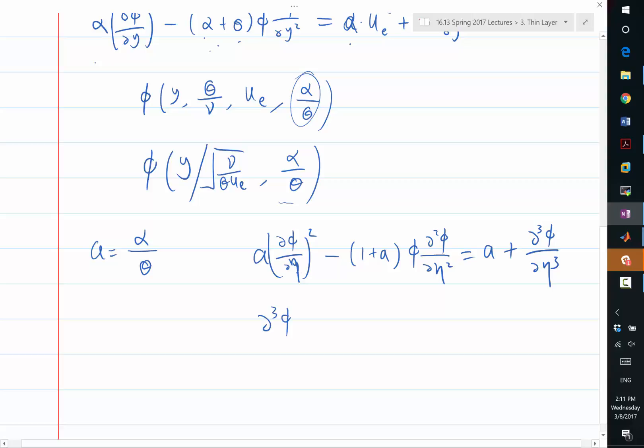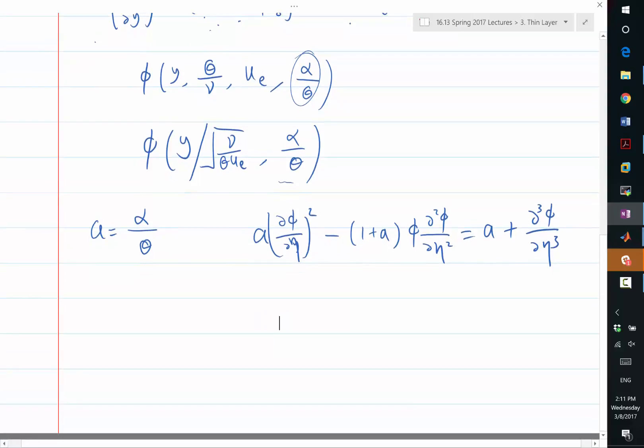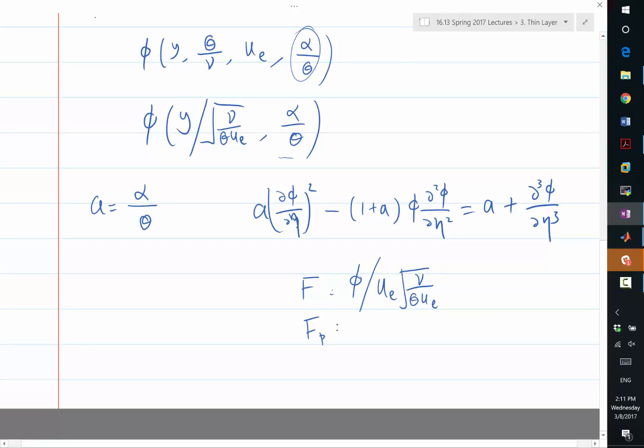And just a slight rearrangement of the equation. Let's still define our f to be the non-dimensionalized version of eta. So phi divided by the appropriate scales. So in this case, I think you need ue times the length scale. So the length scale is what is non-dimensionalizing y. So f to be this. fp to be df d eta. And fpp to be the second order derivative of f with respect to eta. Then this equation becomes fpp prime.